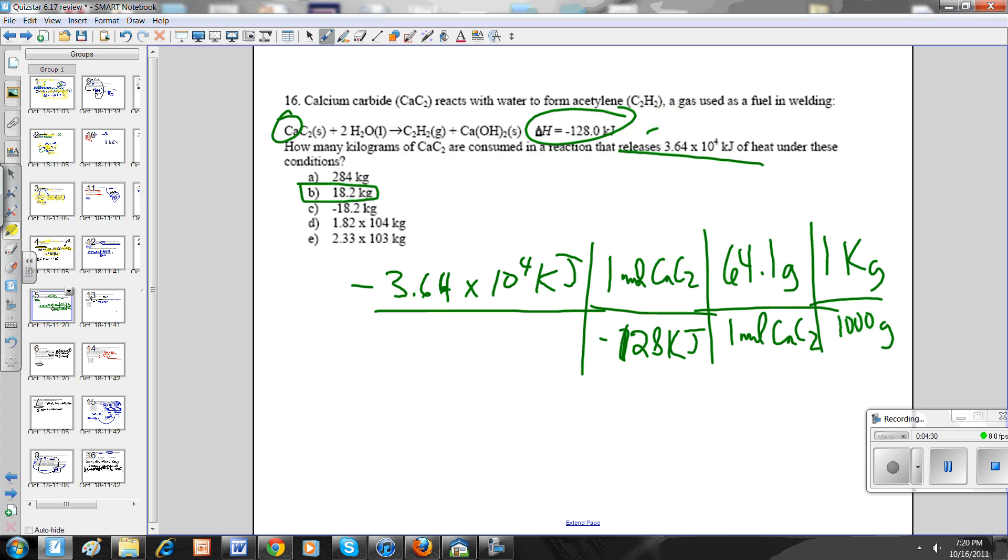Next one. This is 16 off of the chapter 6 thermochemistry. They give you, this is basically just heat stoichiometry. They tell you you release 3.64 times 10 to the 4th kilojoules of heat. So that's my given. I drop my given into the grid. Why the negative sign? Because remember when we release heat, it's going to be negative. So I put negative 3.64 times 10 to the 4th kilojoules.